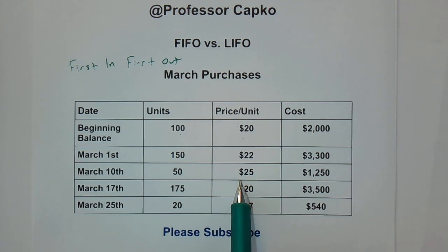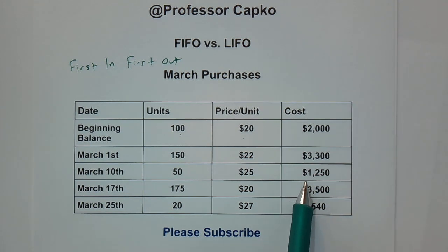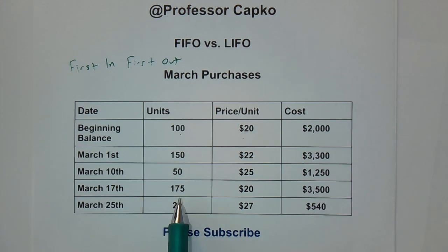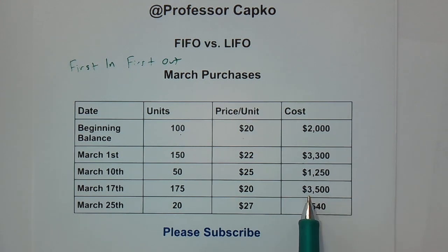The price per unit is $25, so that added an additional $1,250 to our inventory cost. This is a retail establishment selling these to somebody else, so this is their cost. On March 17th the price dropped to $20 again, so we stocked up with 175 units, adding another $3,500 to our inventory cost.